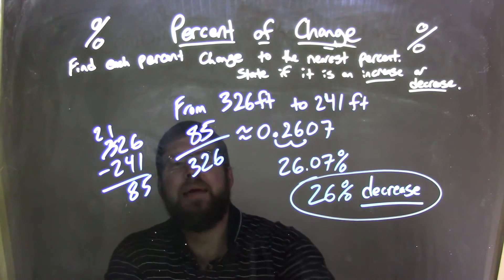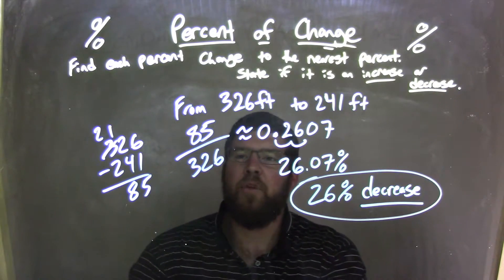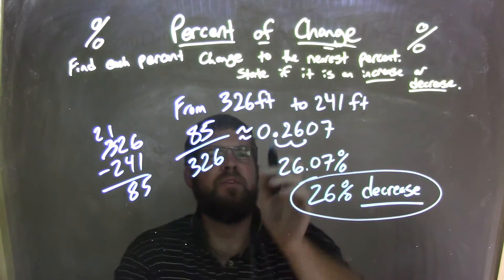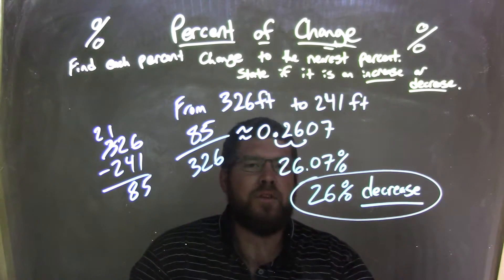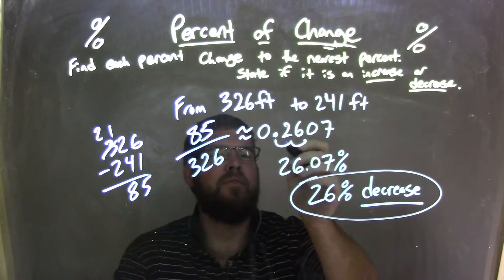326 minus 241 came out to be 85. I took the 85 and divided by 326 to get approximately a decimal of 0.2607. That converts into a percent by taking the decimal and moving to the right two units.